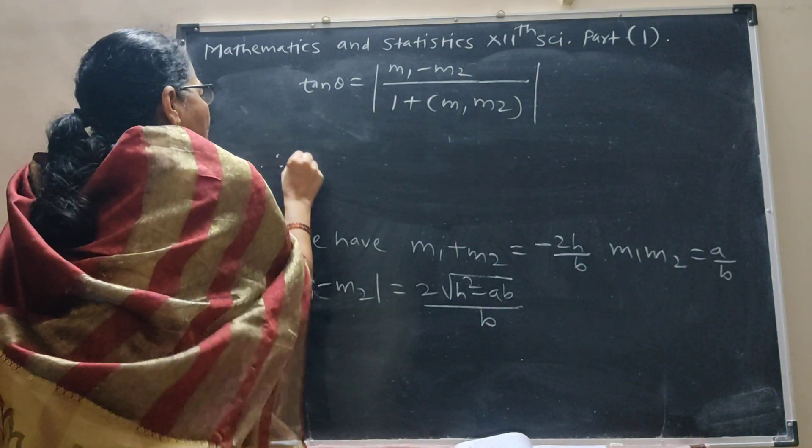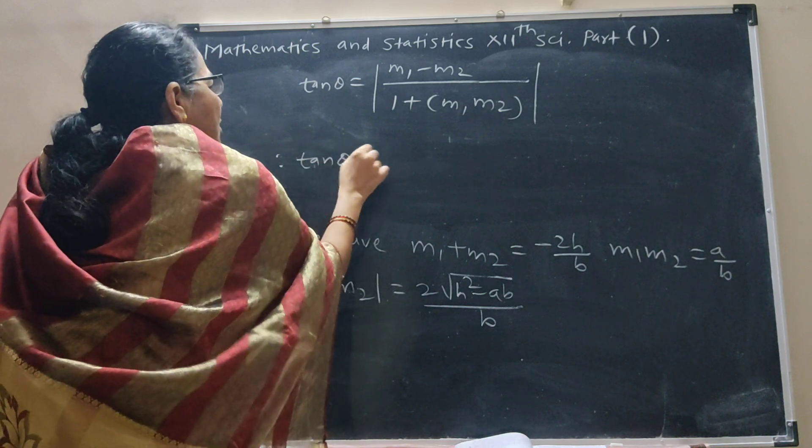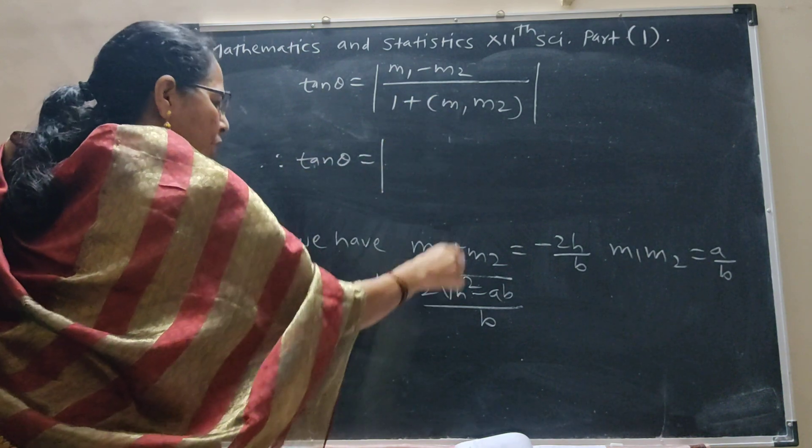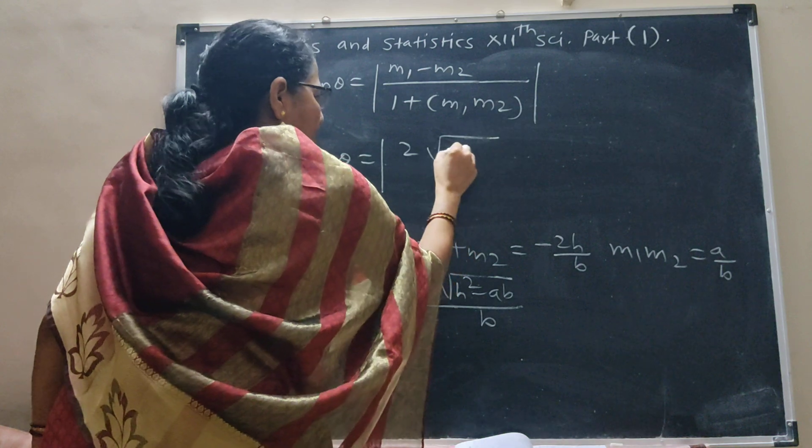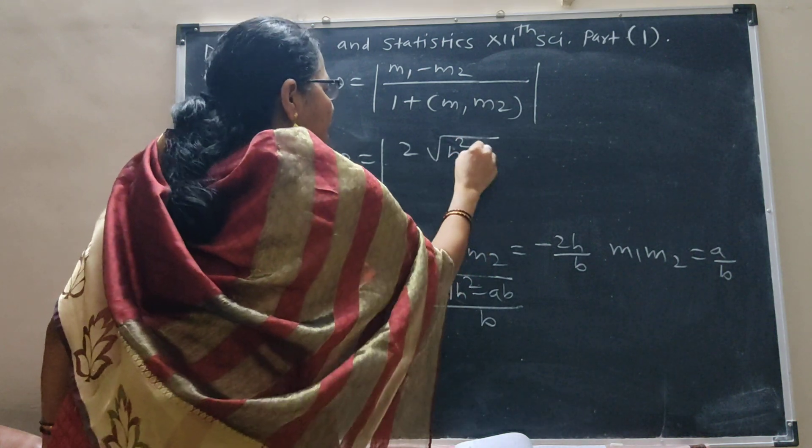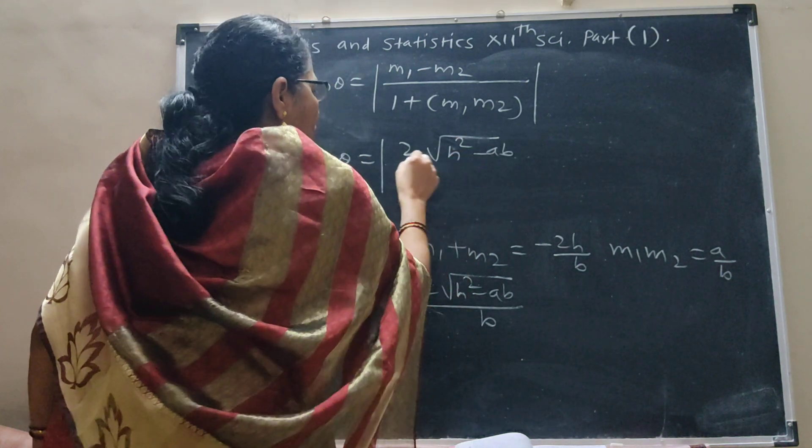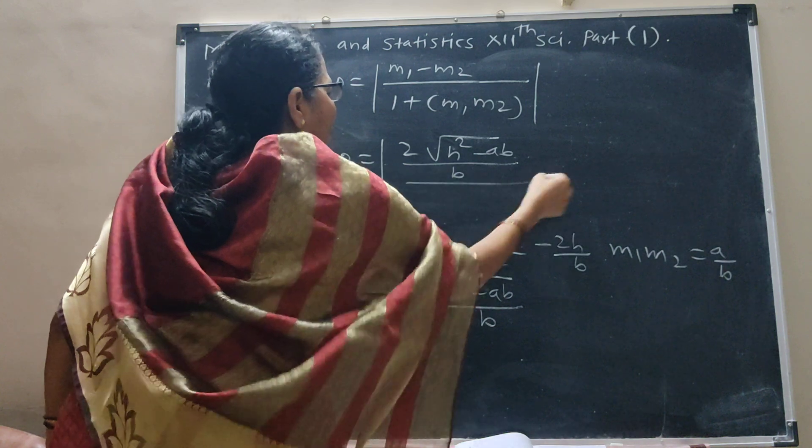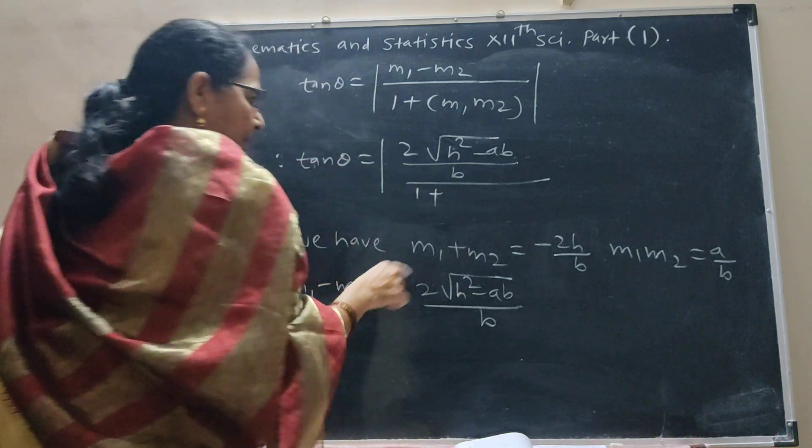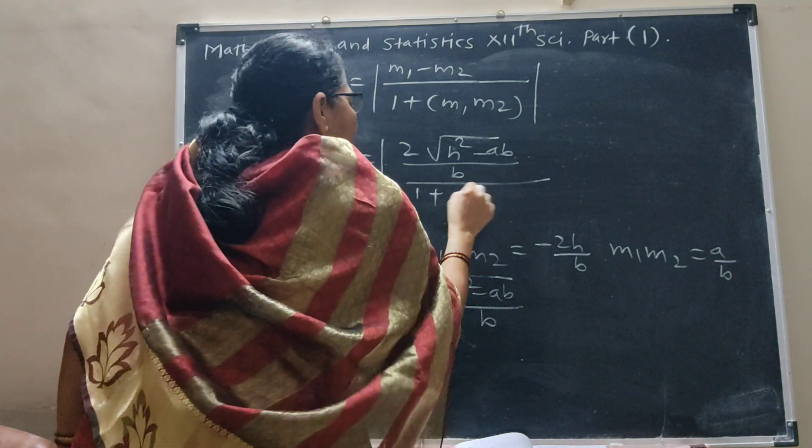Therefore, tan theta is equal to m1 minus m2 is 2 root h square minus ab upon b, divided by 1 plus m1 m2 is a upon b.